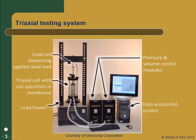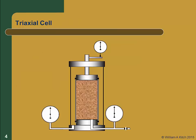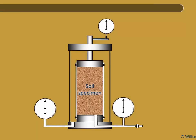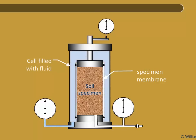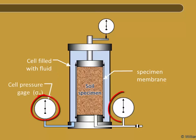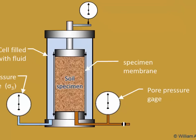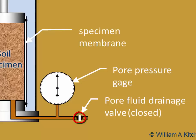Let's take a closer look at the triaxial cell itself. This figure illustrates the triaxial cell and explains how it applies stresses to the soil and how it controls drainage conditions. The specimen sits on a pedestal inside the cell with a loading cap on top. It is surrounded by an impermeable latex membrane that separates the soil and its pore fluid from the fluid that fills the cell. There are two pressure gauges attached to the cell: one measures the pressure of the fluid within the cell and one measures the pore pressure within the specimen itself.